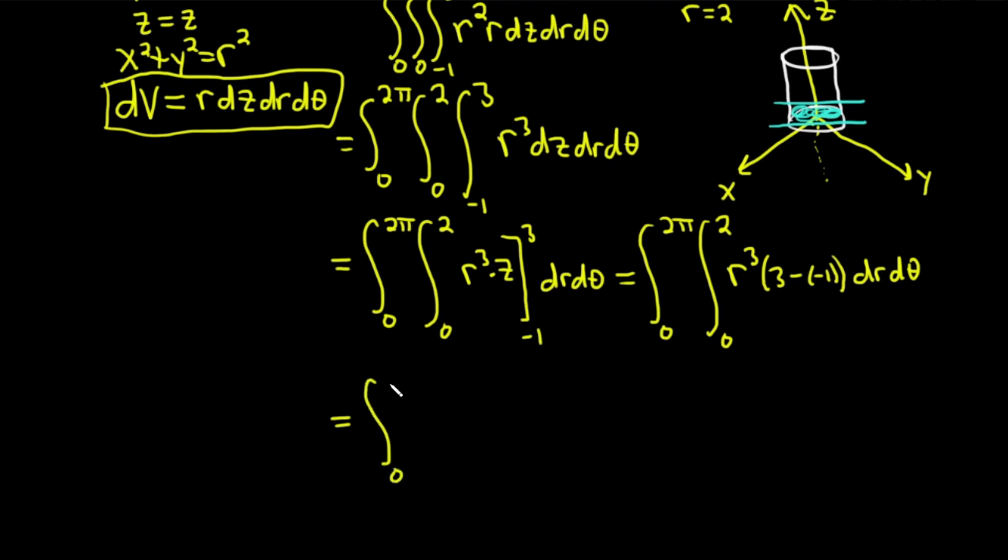This is equal to, going from 0 to 2 pi, going from 0 to 2. It's basically 3 plus 1, which is 4. So we have 4 r cubed. We have dr, d theta.